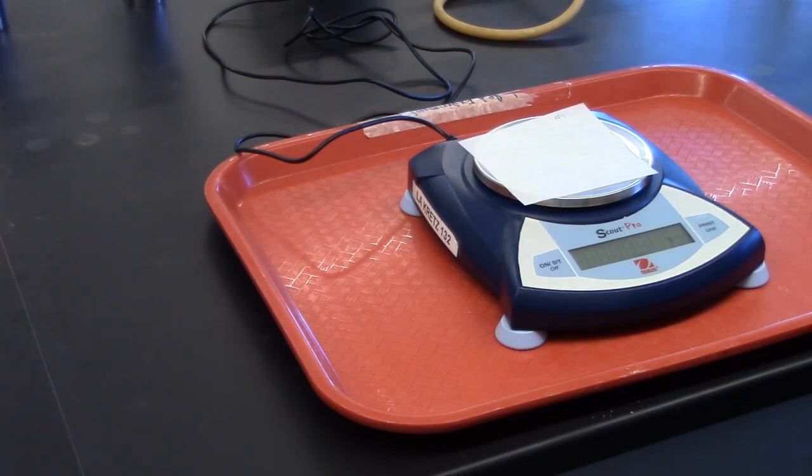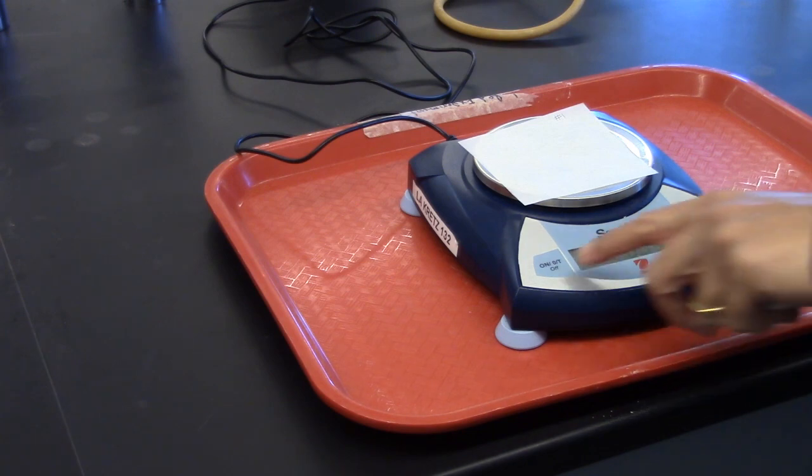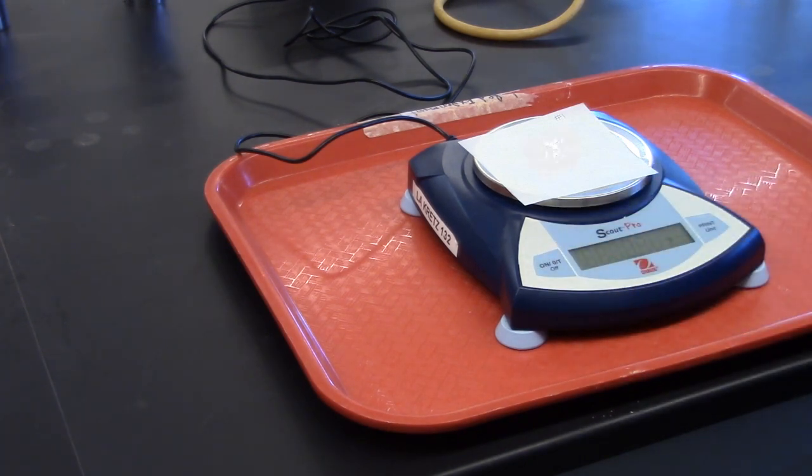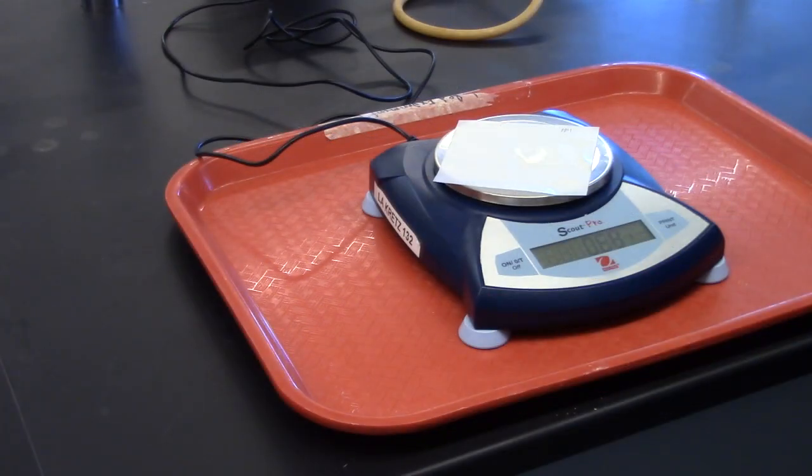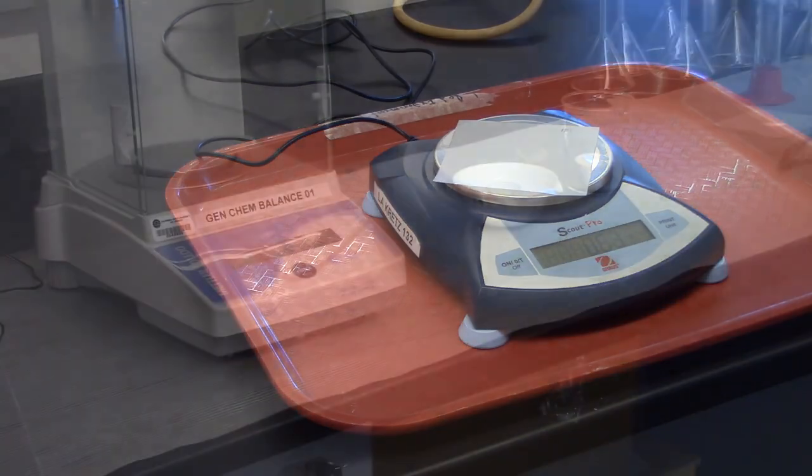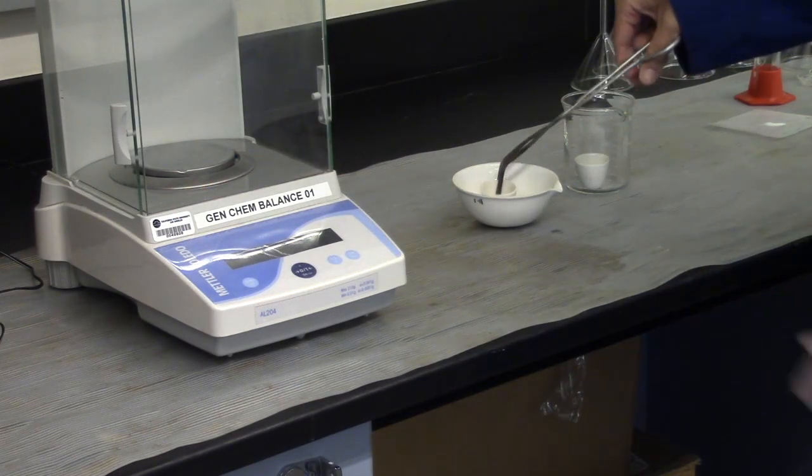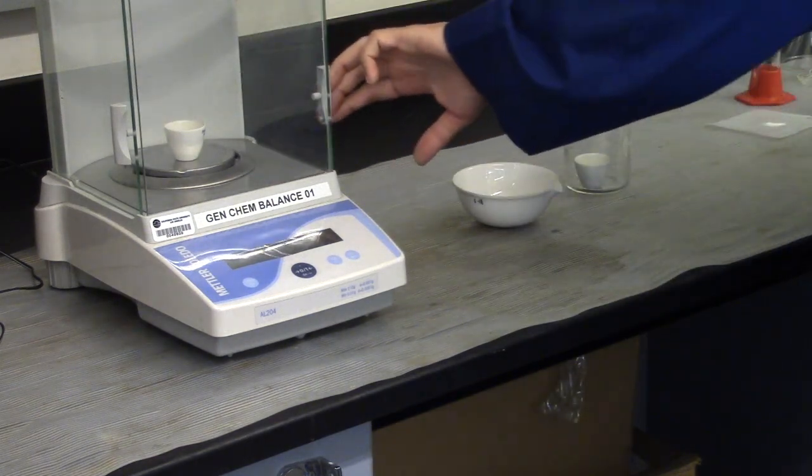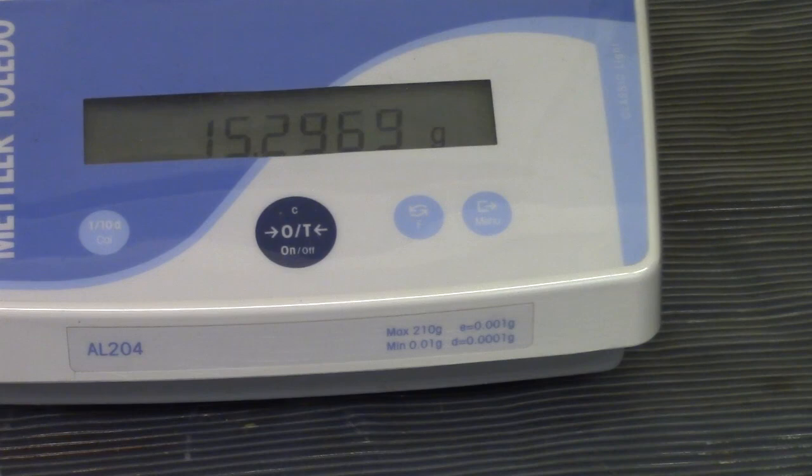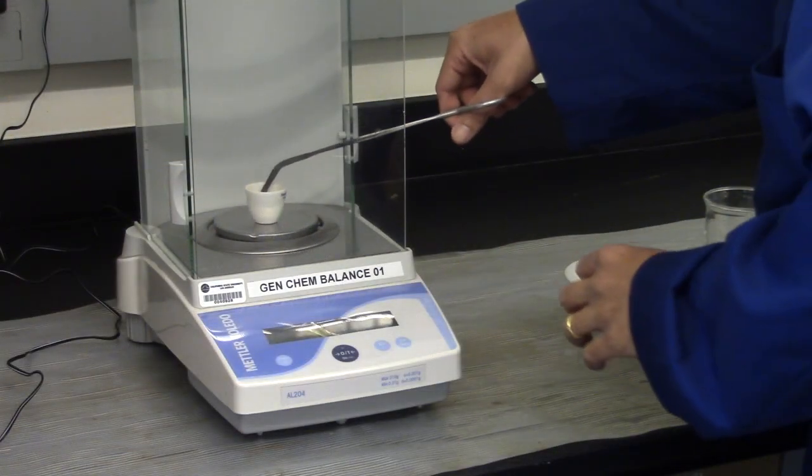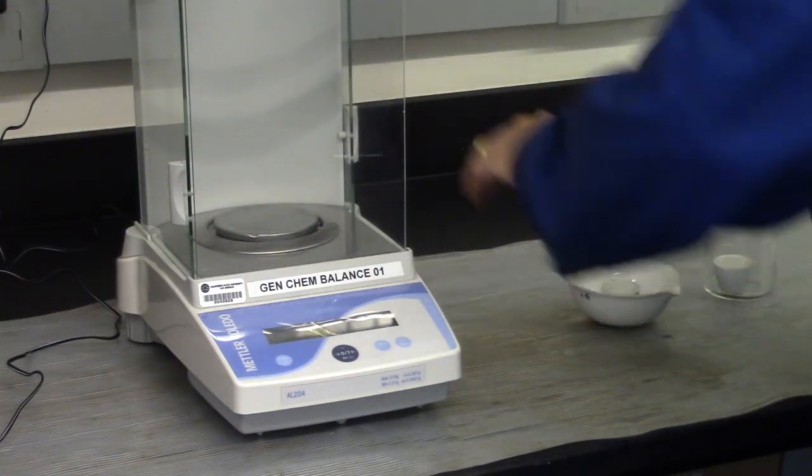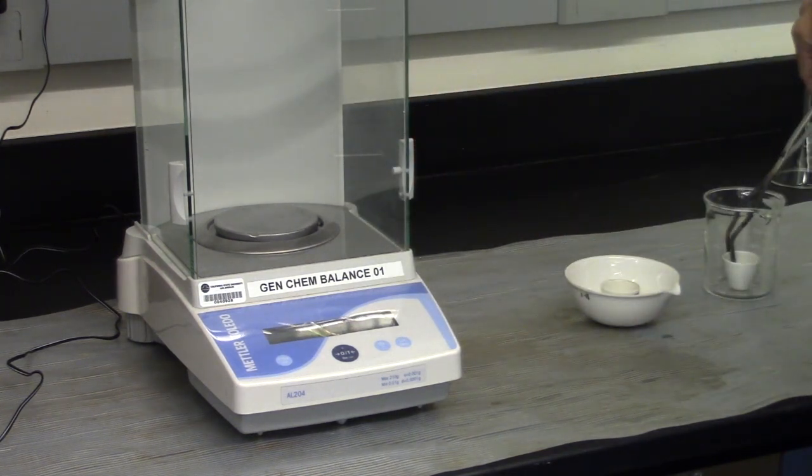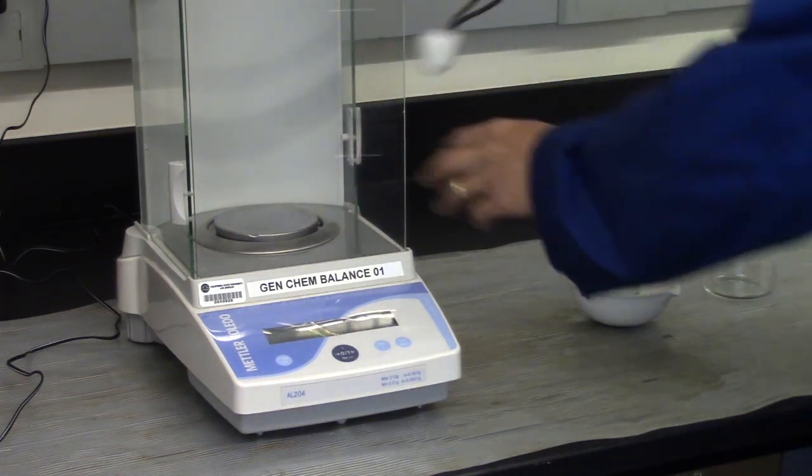While the crucible is cooling, weigh the weighing papers on the centigram balance. Use the tare function. Weigh approximately 0.6 grams of the synthesized sodium hydrogen carbonate and 0.6 grams of the commercial baking soda. You will weigh the crucibles after they cool. Make sure you have a way to tell them apart, such as different containers to transport them. Weigh them empty. Record the mass of the empty crucibles and the analytical balance used. Use an evaporating dish to carry the crucibles back and forth.